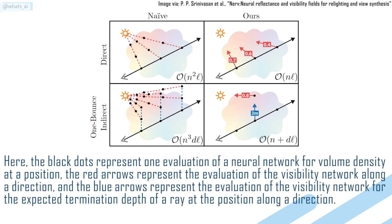Here, the black dots represent one evaluation of a neural network for volume density at a position. The red arrows represent the evaluation of the visibility network along a direction. And the blue arrows represent the evaluation of the visibility network for the expected termination depth of a ray at the position along a direction.